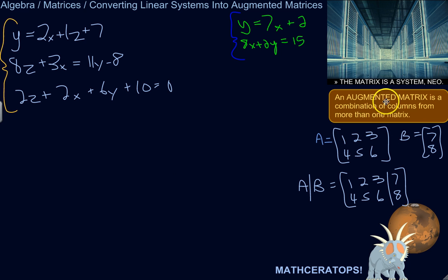An augmented matrix is a combination of columns from more than one matrix. So if I have matrix A here and matrix B here, the augmented matrix of A and B would be A combined with B, like that line indicating the separation between the two original matrices.